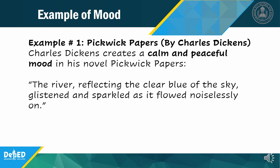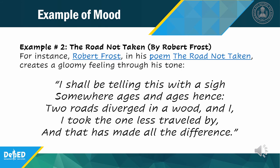Examples of mood. Example number one — Pickwick Papers by Charles Dickens: Charles Dickens creates a calm and peaceful mood in his novel Pickwick Papers: "The river, reflecting the clear blue of the sky, glistened and sparkled as it flowed noiselessly on." Example number two — "The Road Not Taken" by Robert Frost: Robert Frost creates a gloomy feeling through his tone: "I shall be telling this with a sigh, somewhere ages and ages hence, two roads diverged in the wood, and I, I took the one less traveled by, and that has made all the difference."